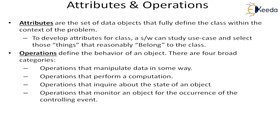What are attributes and what are operations? Attributes are the set of data objects that fully define the class within the context of the problem. When we try to define the classes, inside the class definition there will be data objects which define the class. Those are called attributes. To develop attributes for a class, a software engineer can study use cases and select those things that reasonably belong to the class.